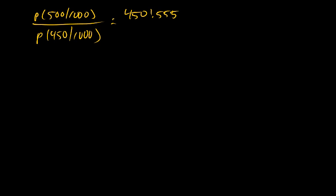So let me rewrite the problem again. Probability that we're finding 500 molecules on the left in 1000 versus 450 on the left in 1000, so some slightly small change we're looking at here, about 10%. And we found that that was equal to 450 factorial times 550 factorial over 500 factorial times 500 factorial. We can then look at dealing with these factorials.